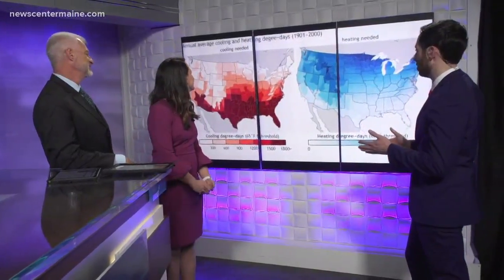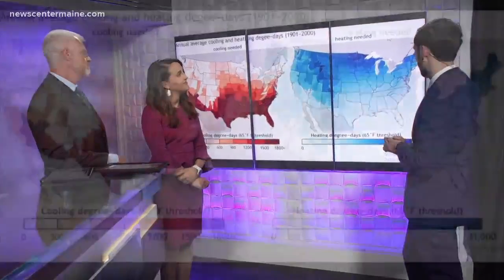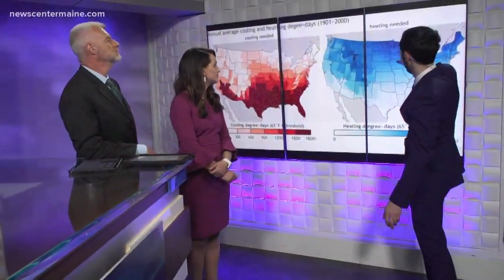This is average heating and cooling degree days across the United States. To recap: a heating degree day is when your average temperature — high and low combined — is below 65 degrees. A cooling degree day is when it's above 65, assuming you need cooling in one case and heating in the other.